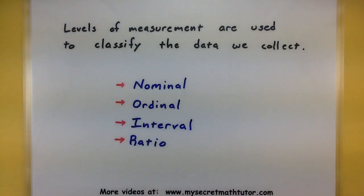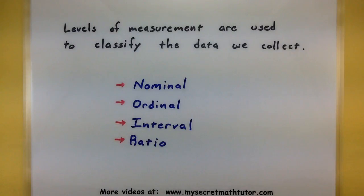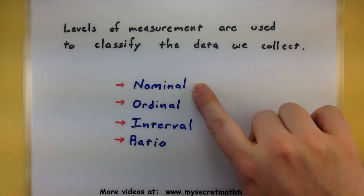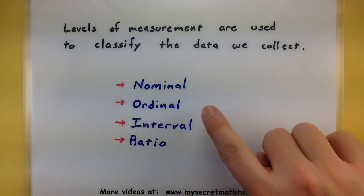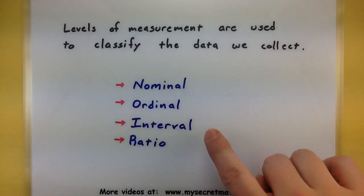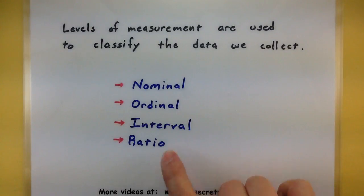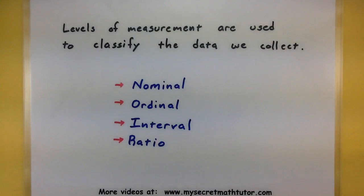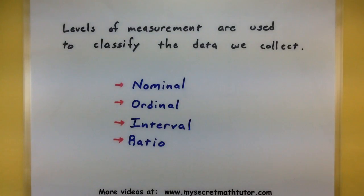We're going to go out there and collect all kinds of data, and we can break it into lots of different groups. The four basic groups are the nominal level of measurement, the ordinal, the interval, and the ratio level of measurement. These are all different types of data that we will collect, and we'll explain a little bit more about what each of these mean.